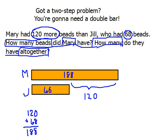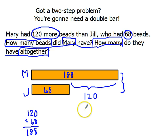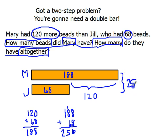Now we're ready to attack the second part of the problem: how many do they have all together? I'll use another bracket to show that I want to know the total. If I want to know how many they have all together, I take how many Mary has and add it to how many Jill has. Together they have 256. Not so bad — it makes sense once you know what the parts do.